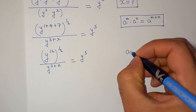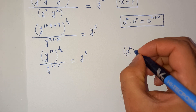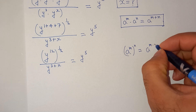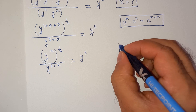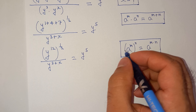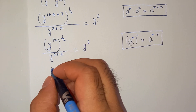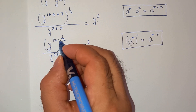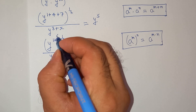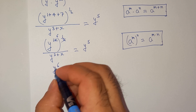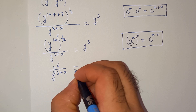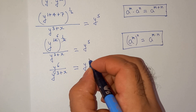Now we also know this exponential rule which is a power m bracket power n equals to a power m multiplied n. So we apply this rule: y power 12 will be multiplied by 1 by 2, giving us 6. So we have y power 6 divided by y power 3 plus x equals to y power 5.